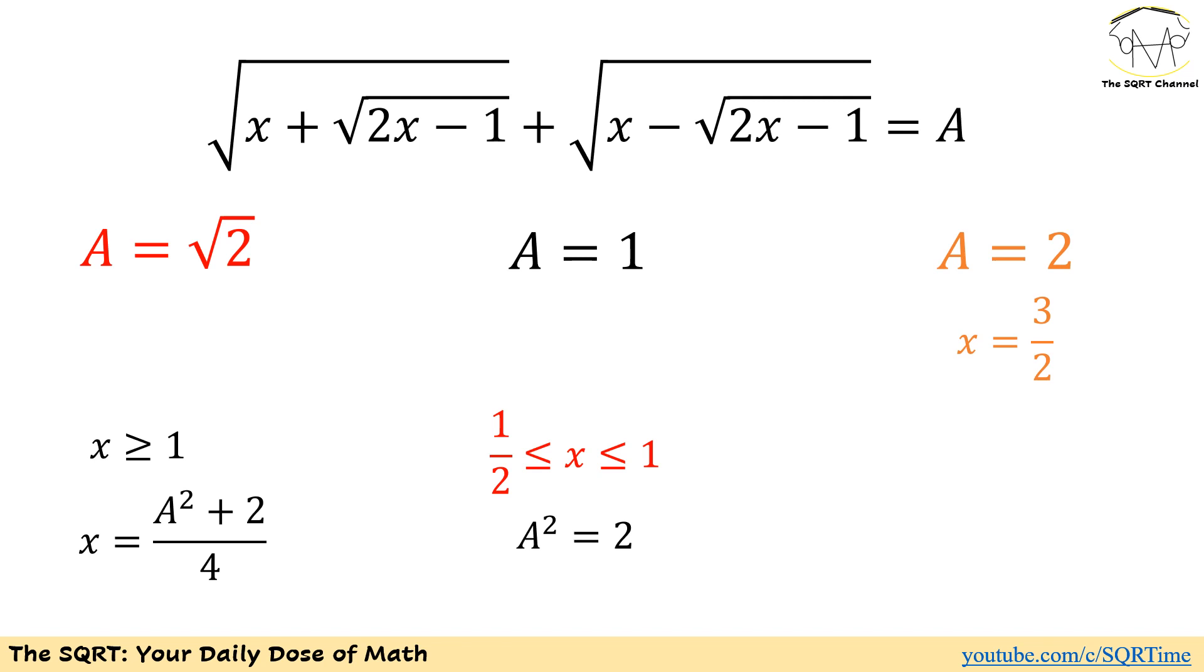Now let me add a few details here. In the original problem, we were supposed to solve the problem for three different values of A: A square root of 2, 1, and 2. Based on what we found, we are going to face two cases. In the first one, if x is greater than 1, then x is going to be A squared plus 2 over 4. And in the second one, we found that A squared needs to be 2. And for that case, any x value between 1 over 2 and 1 are going to be possible.